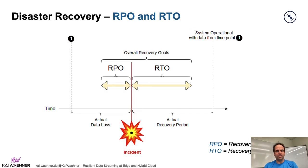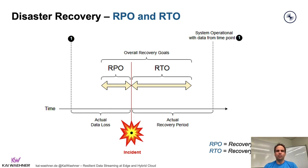When we talk about resilience, there are two terms we need to understand regardless of what technology you use. The RPO is the recovery point objective — this defines how much data you will lose in case of a downtime or disaster. The RTO, the recovery time objective, means what's the actual recovery period before your systems are online again. Both terms are very important. Initially many people say they need zero downtime and zero data loss, but this is very often hard to architect. Always ask yourself what downtime or data loss is acceptable for your use case.